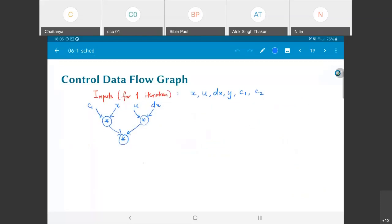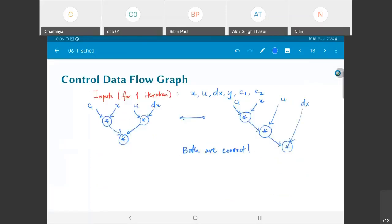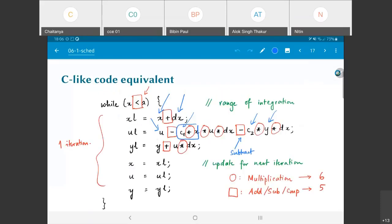Let's do that. I'll once again have a multiplication which takes c2 and y, and then afterwards it needs to multiply by dx. Once I have done both of these, what do I need to do with this? I need to do the subtraction, which would basically be a minus, and then what else is remaining? This would be the second subtraction.